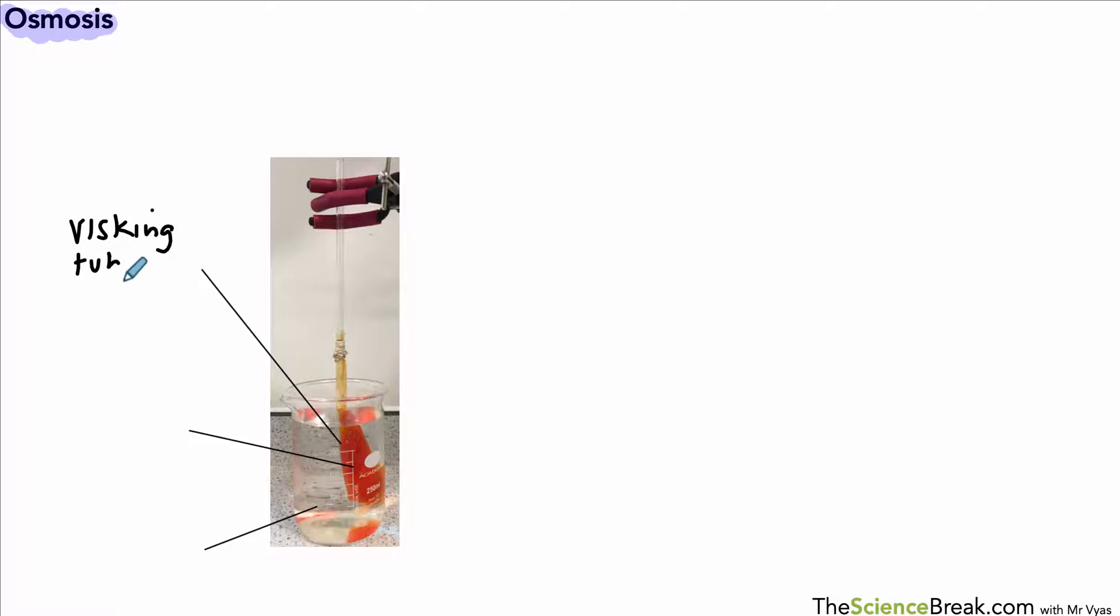Here we've got something called visking tubing. It's a type of plastic tubing that has a specific property, and that is that it is partially permeable. That means it will let some substances through but not others. Inside our tubing we have some sugar solution along with some orange food dye so we can see what happens in the experiment.